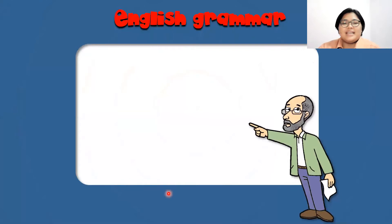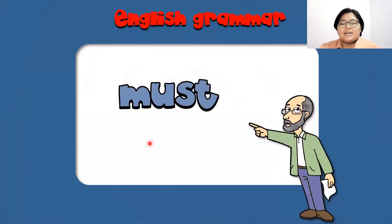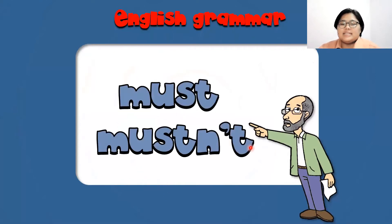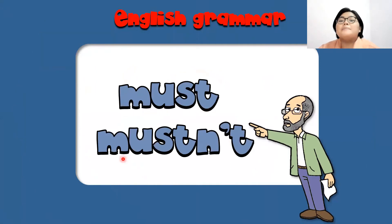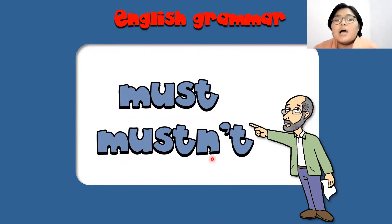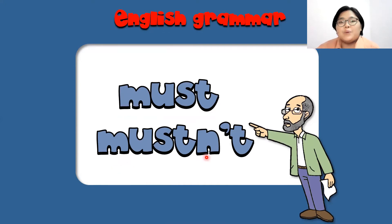English grammar today: must and mustn't. Repeat after me, Grade 6 students — must, mustn't. Look how I pronounce the word: must, mustn't. Very good.